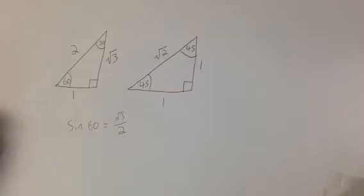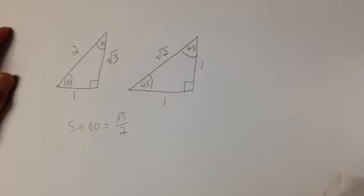From these triangles, you can find the sine, cosine, and tan of 60 degrees, 30 degrees, or 45 degrees.